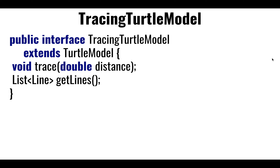We extended the turtle model capabilities so that not only could it save its position, but it could also keep track of lines that it could draw on the screen. The way we implemented it was as a list of lines that we appended to as we traced through the screen. So get lines would give us all the lines traced so far. Trace was the equivalent of move, but not only did it move — it also calculated a new line and added it to the collection. Then get lines allowed us to either print to the console or, like we're going to do today, iterate over these lines and draw them on the screen.